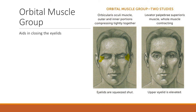The levator palpebrae superioris muscle — when the whole muscle contracts, the upper eyelids elevate, without the frontalis muscle being involved, so we see a smooth forehead. This orbital muscle group looks very different whether the eyes are closed or open wide.